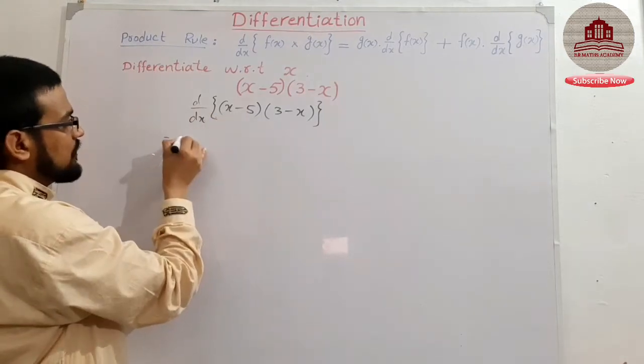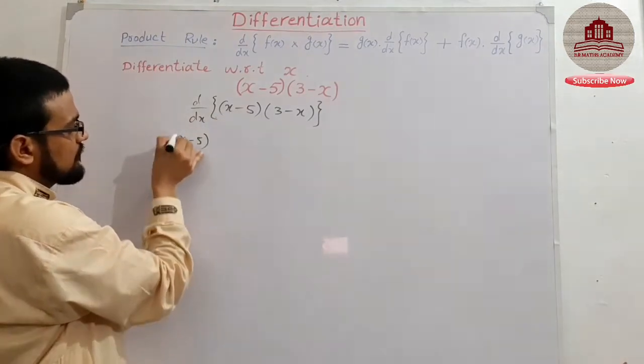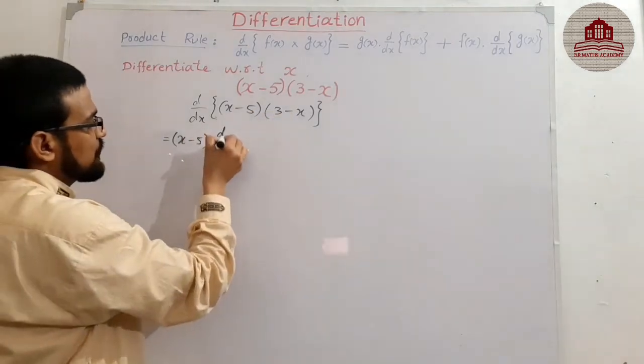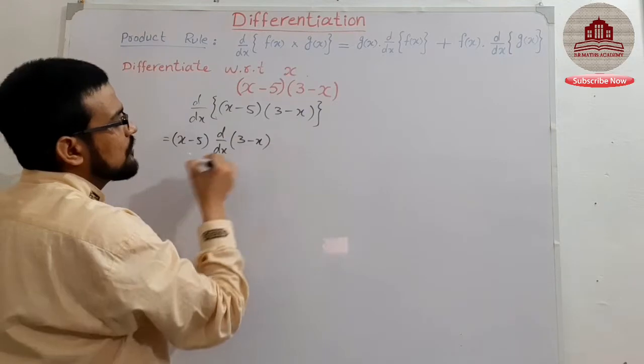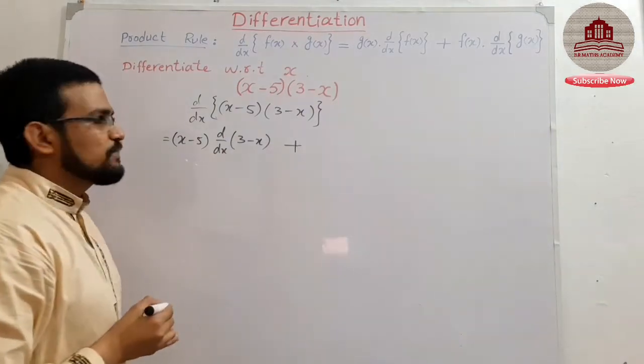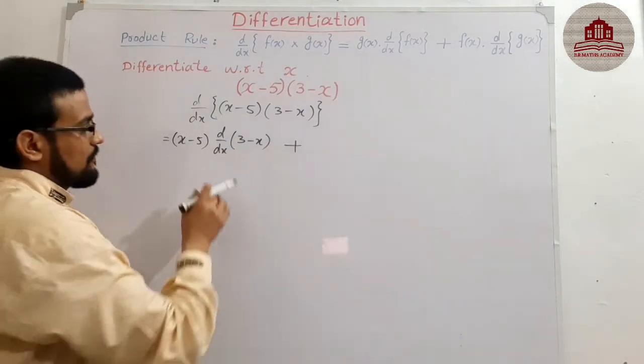So turn d/dx of (x - 5)(3 - x), this one. And according to rule, first function, first function as it is, derivative of second is a note of fixed rule, positive plus, you can first any term.